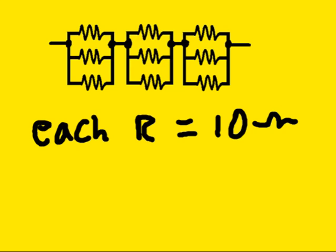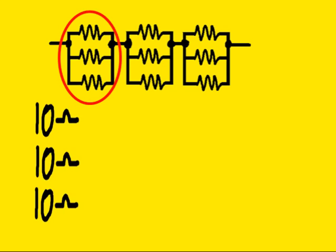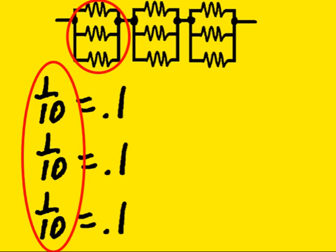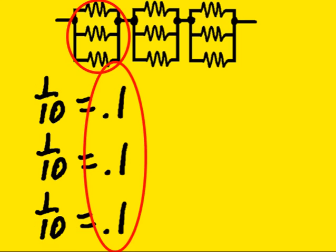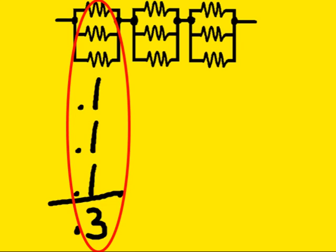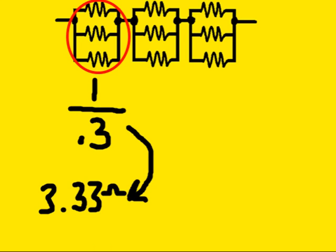Let's say each resistor is 10 ohms. So I have 10, 10, and 10 ohm resistors there. Now, I flip them to make them 1 over 10, which is 0.1. I sum them up, which is 0.3. And then I flip it again from 0.3 to 1 over 0.3, which is 3.33 ohms.